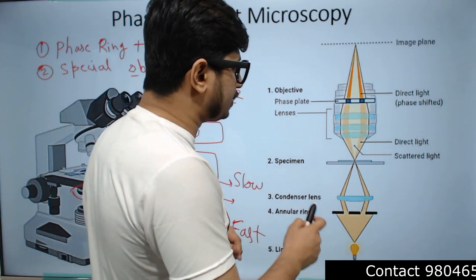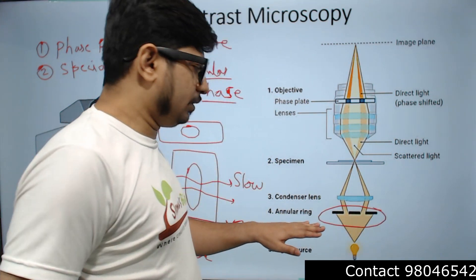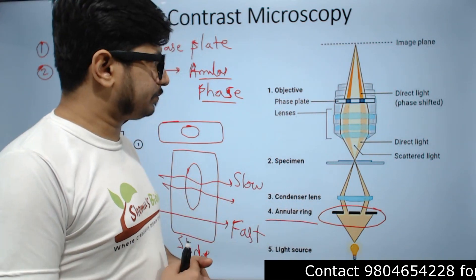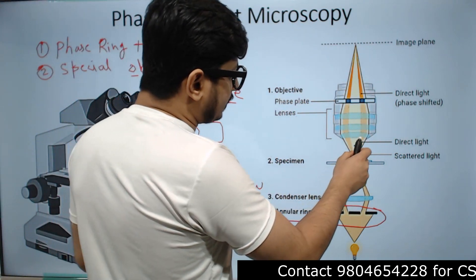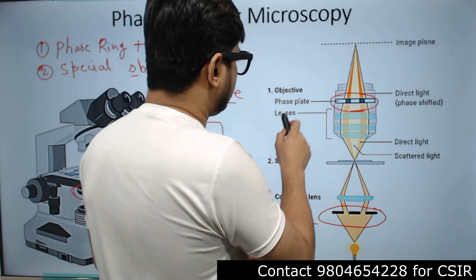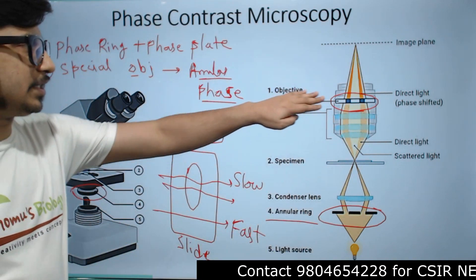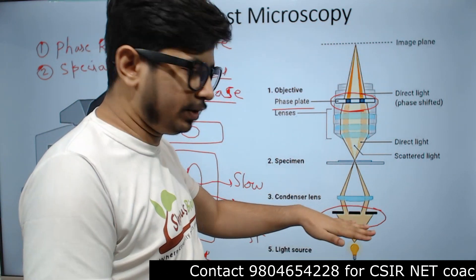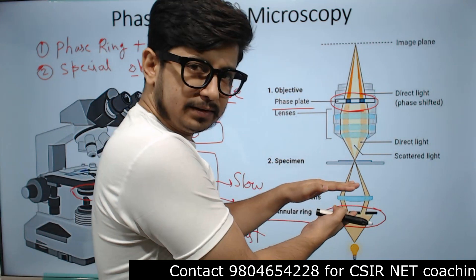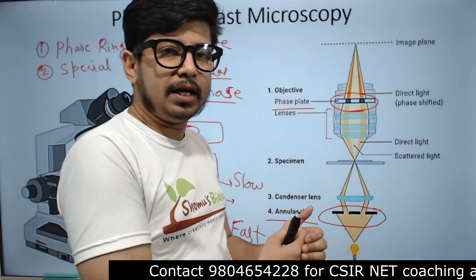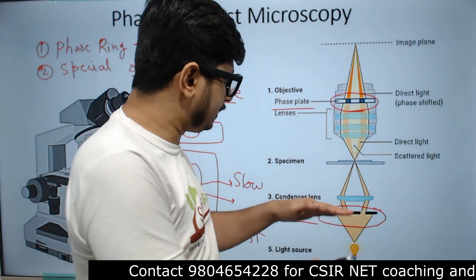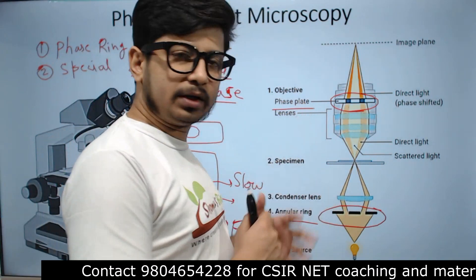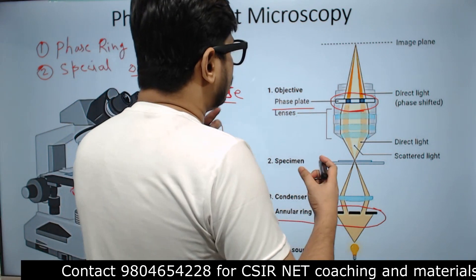There are two new components. One is the phase ring, also called the annular ring, and the other is the phase plate present inside the objective lens itself. The phase ring or annular ring is present near the light source, just right after it, along with the condenser — beneath the condenser. These are the two components unique to a phase contrast microscope.